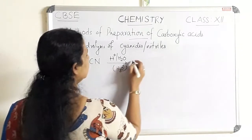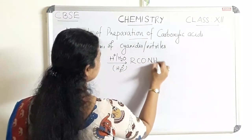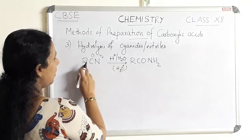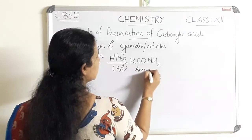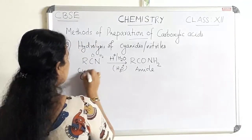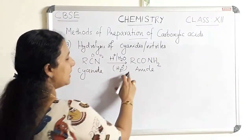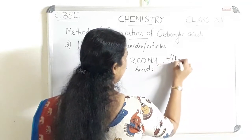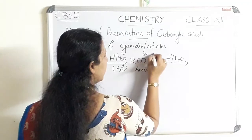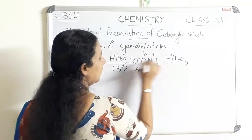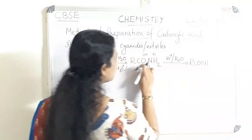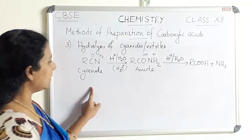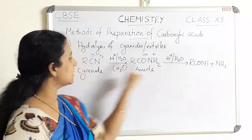RCN is converted to RCONH₂ — that means a water molecule is attached, giving RCONH₂. This is the intermediate: amide is formed first. So cyanide on acid hydrolysis gives amide as the first product. Further hydrolysis gives OH and H attached, so the final product is RCOOH plus NH₃ as the byproduct. This is the general equation for the formation of carboxylic acid from cyanides.